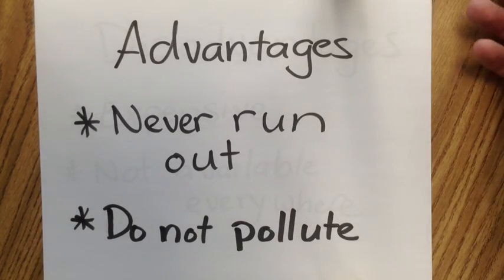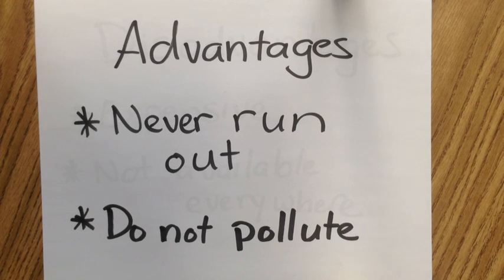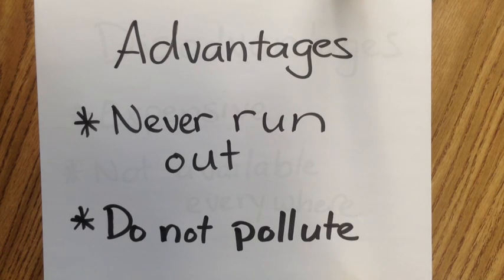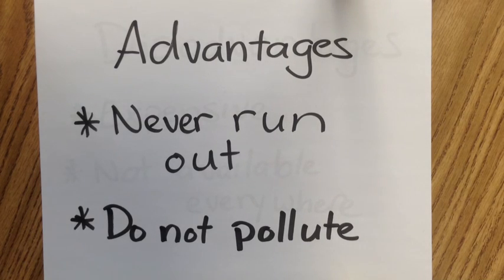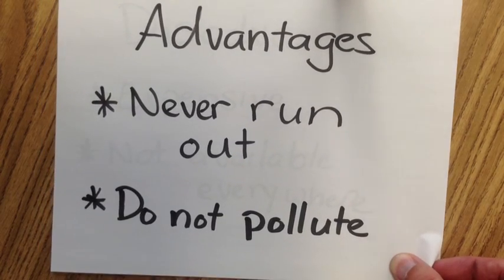Now let's talk about some advantages of these three renewable resources. First, very important: they never, ever run out. The sun is projected to be around for another seven billion years, so we will have solar energy for a very long time. The same is true for wind and water. Also, these types of energy do not pollute — there is very little pollution that comes from using the sun, wind, and water.